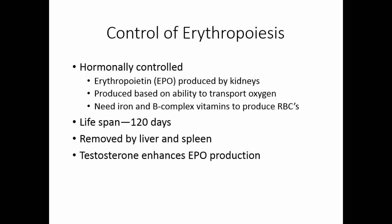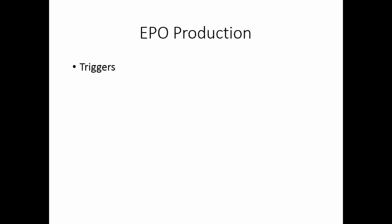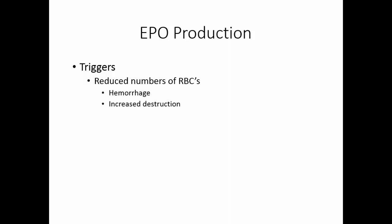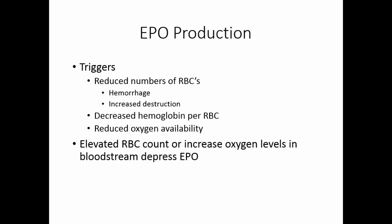Testosterone is a hormone that may enhance erythropoietin production, which may account for why men have higher red cell count values than women. The triggers for erythropoietin production include a reduced number of red blood cells from hemorrhage or increased destruction, a decreased hemoglobin per red blood cell, or reduced oxygen availability. Once the red blood cell count goes up or oxygen levels increase, EPO production is depressed.